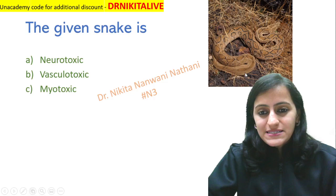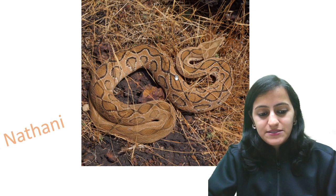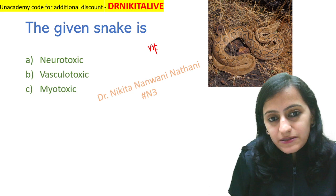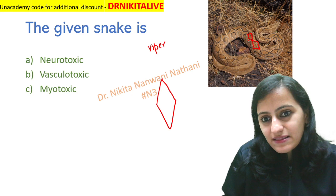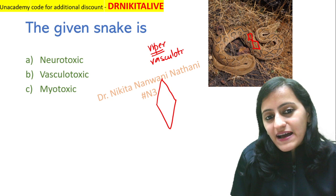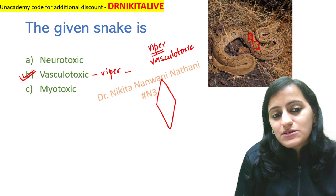What we see in this image of the snake is that there are diamond-shaped marks. These diamond-shaped marks are seen in viper. Viper is V, and inverted V makes a diamond. So when you see this diamond shape — V and inverted V — that is a viper. And remember, V for V: that is vascular toxic. So the given snake is vascular toxic because it's a viper with this diamond shape.